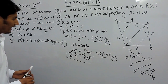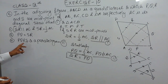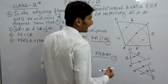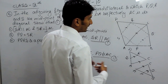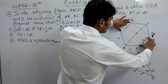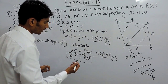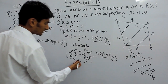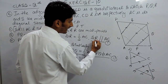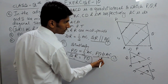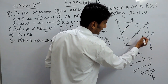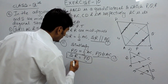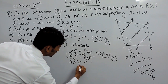We have proved the first two parts. In the third part, we have to prove that PQRS is a parallelogram. A quadrilateral is a parallelogram when two of its sides are both parallel and equal. We have already proved that SR is equal to PQ. Also, since SR is parallel to AC and PQ is parallel to AC, SR must be parallel to PQ. So SR is equal to PQ and SR is parallel to PQ.